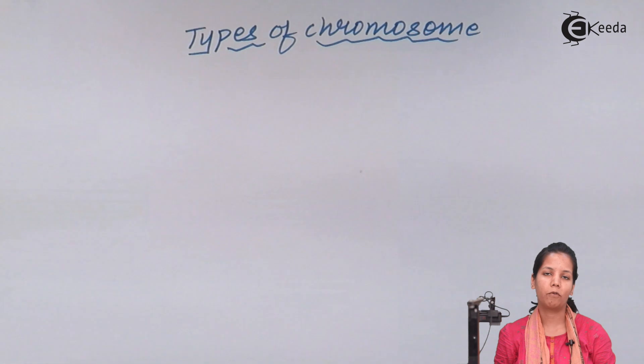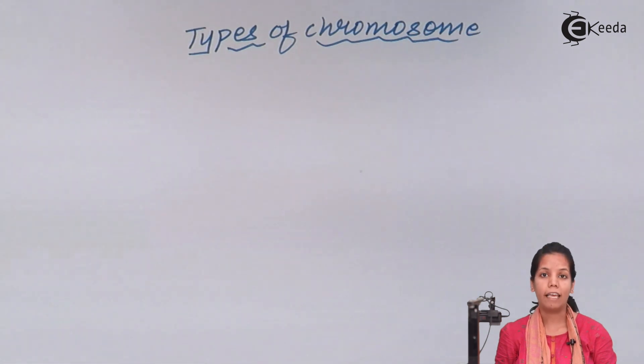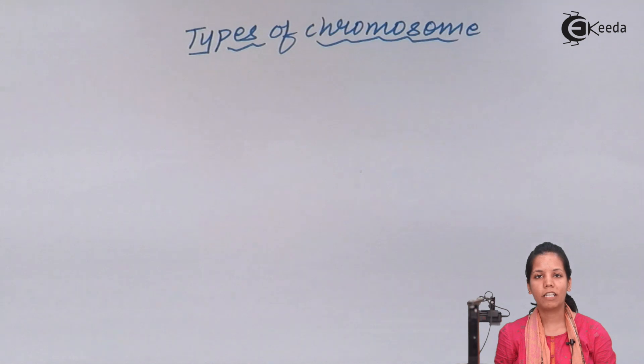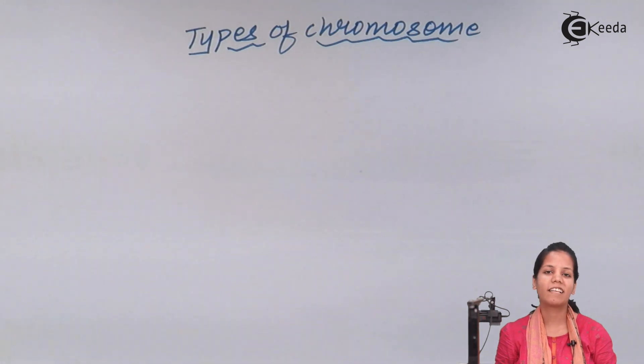There are four different types of chromosomes. They are telocentric, acrocentric, metacentric, and submetacentric.